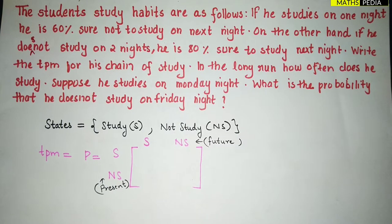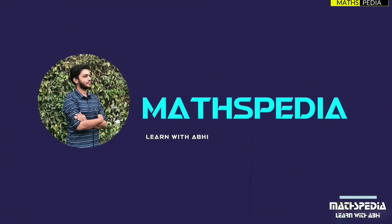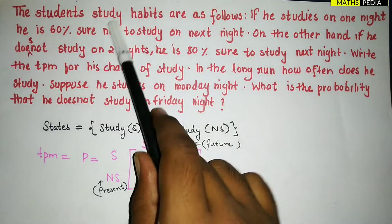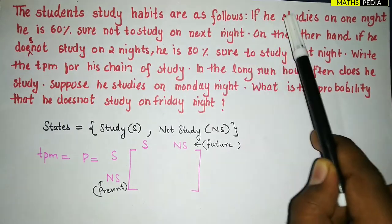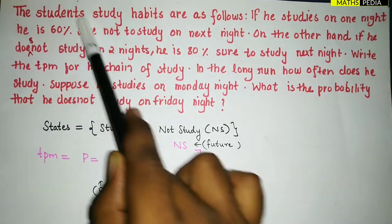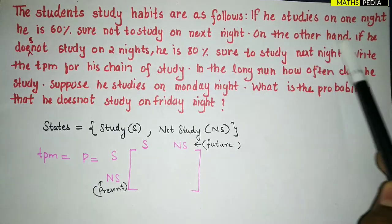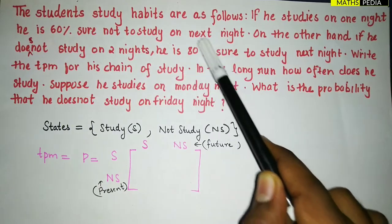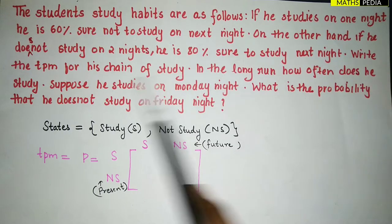The first question is about a student's study habits. If he studies on one night, he is 60% sure not to study on the next night. On the other hand, if he does not study on a night, he is 80% sure to study the next night. We need to write the TPM.